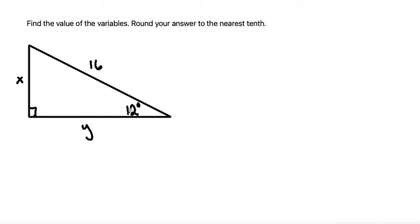However, since we know the angle as well, we can use a trig ratio. So if we start from the perspective of the 12 degree angle, the opposite side is the side that's not touching this angle, which is the x. So this side over here is opposite.